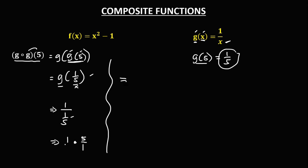For multiplication, multiply the numerators: 1 times 5 equals 5, then over 1 times 1, which is 1. So therefore, g of g of 5 is equal to 5 divided by 1, which is 5.